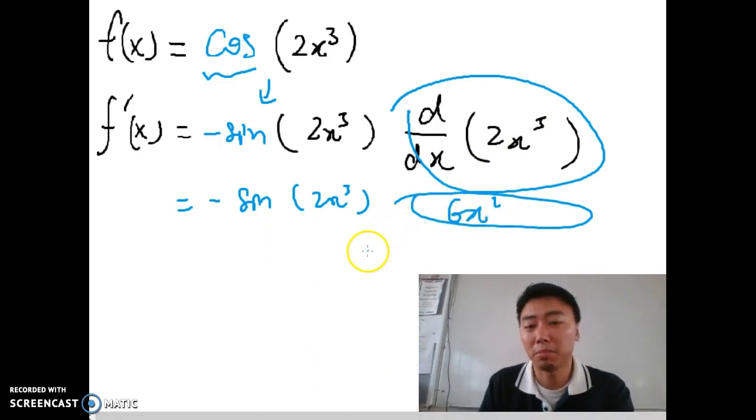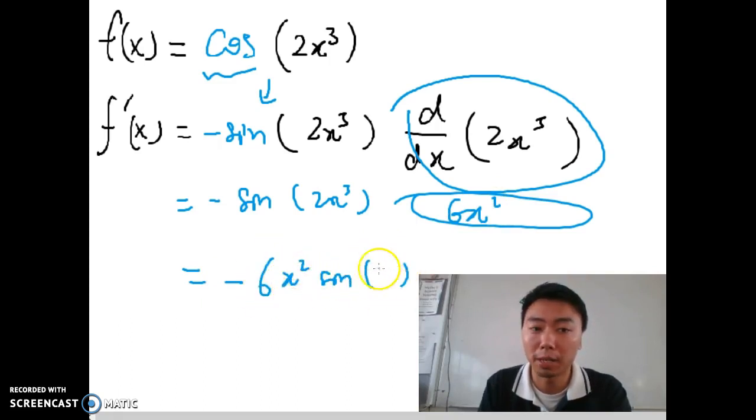Alright, and then the differentiation part is done and what you need to do is bring the 6x² to the front with the negative to make your answer look better. OK, so this is chain rule.